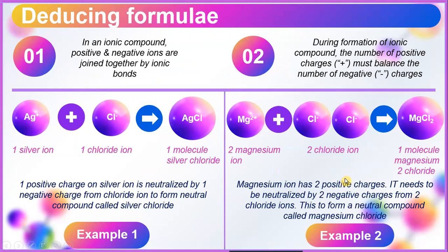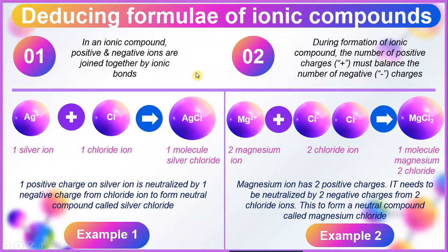This is a sample of deducing formula of ionic compounds. There are 2 rules to remember. In an ionic compound, positive and negative ions are joined together by ionic bond. During formation of an ionic compound, the number of positive charges must balance the number of negative charges. Example 1: 1 positive charge on silver ion is neutralized by 1 negative charge from chloride ion to form neutral compound silver chloride. Example 2: magnesium has 2 positive charges and it needs to be neutralized by 2 negative charges from 2 chloride ions to form neutral compound magnesium chloride.